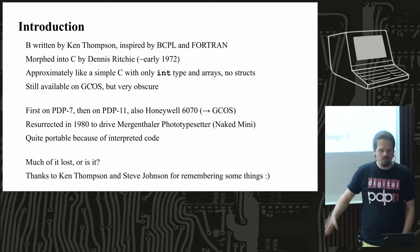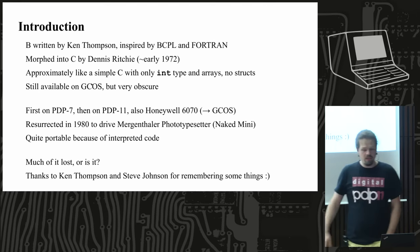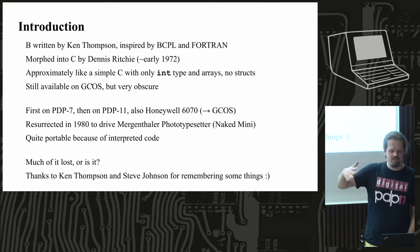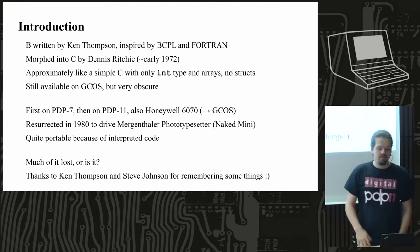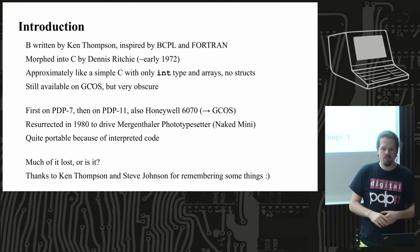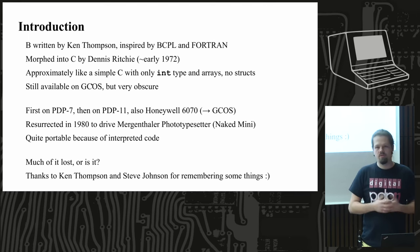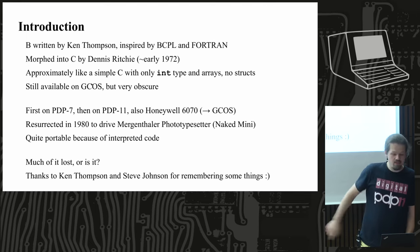In the early 1970s, around 1972, Dennis Ritchie — the other father of Unix, so to speak — took B and gradually morphed it into C, what is today known as C. You can think of B as a very simple version of C with only a single type: the machine word, so it's kind of like an integer. It has arrays of that, but no structs — a very minimalistic language.